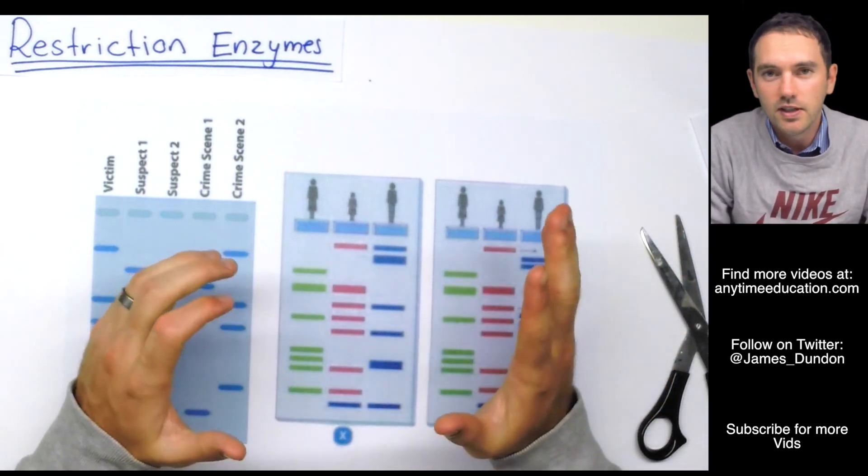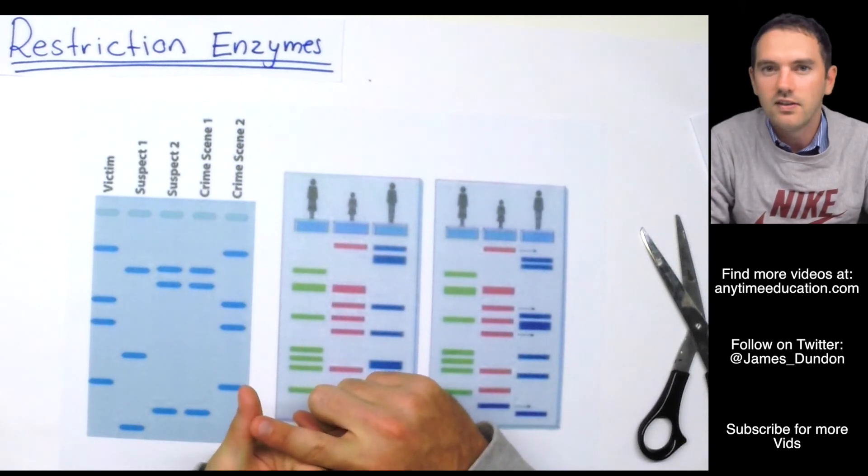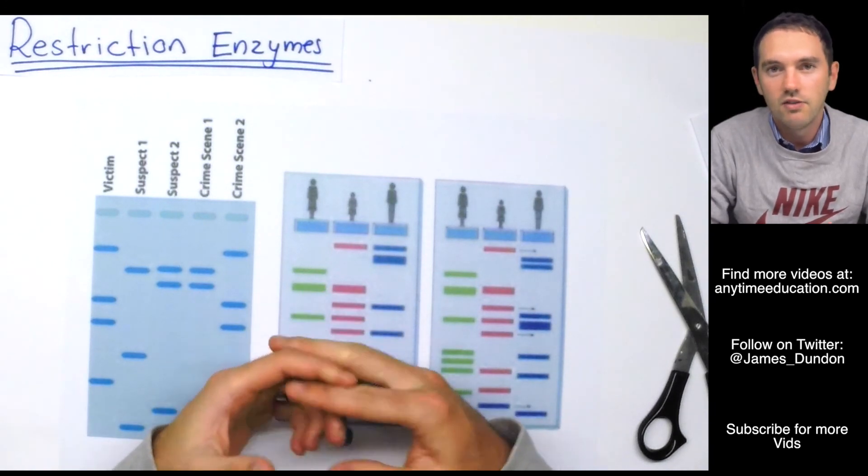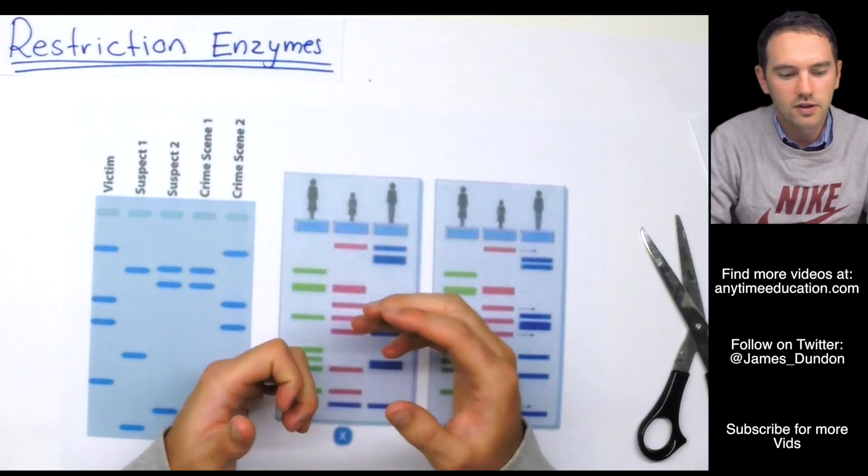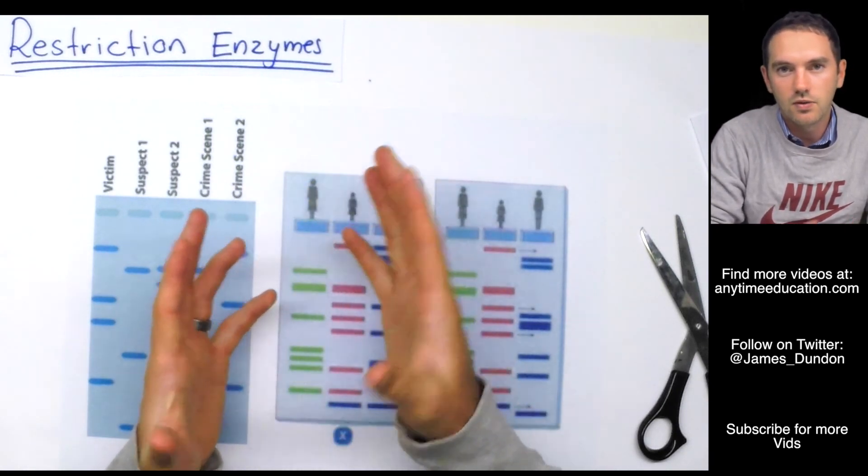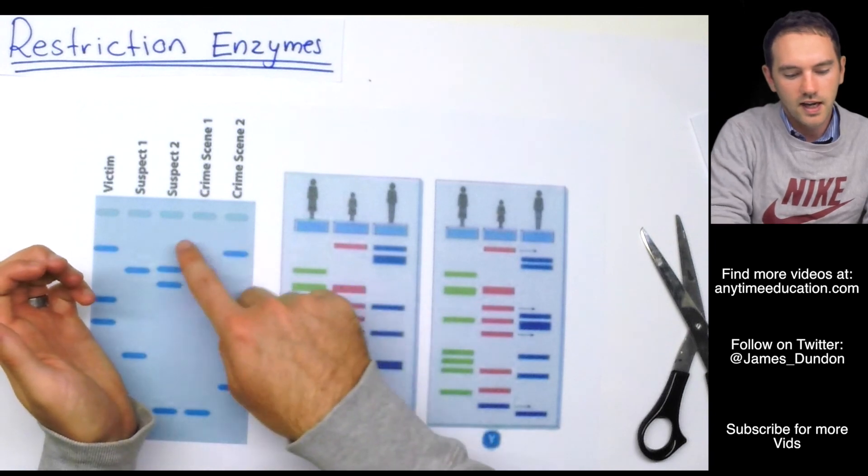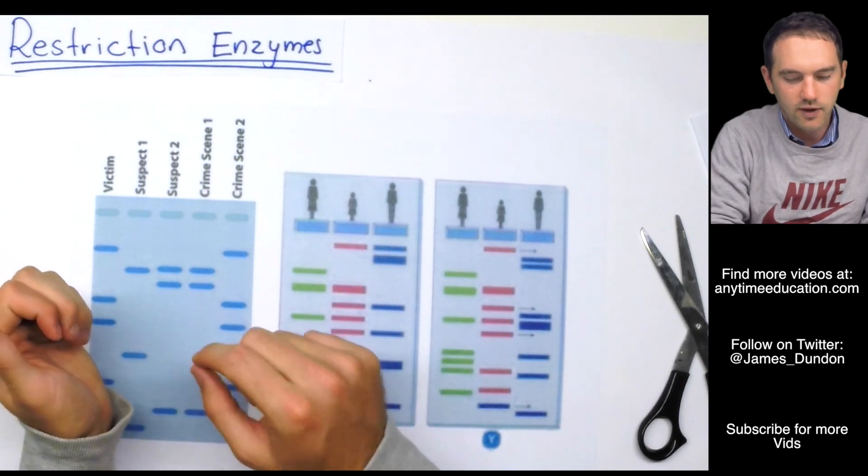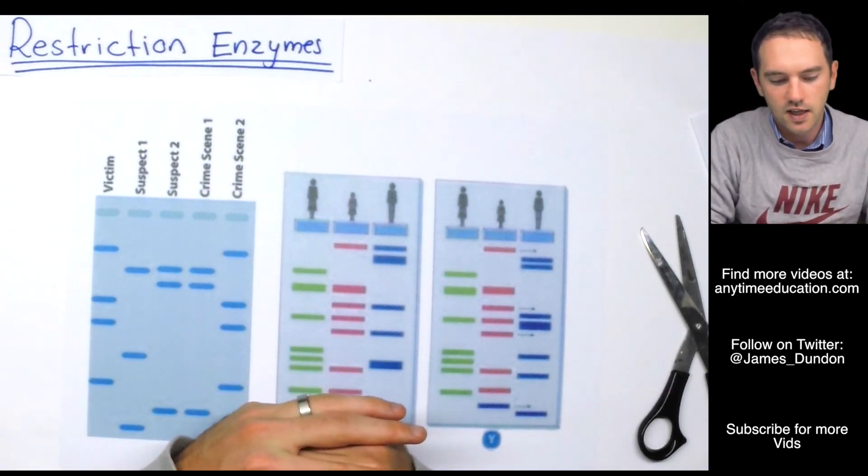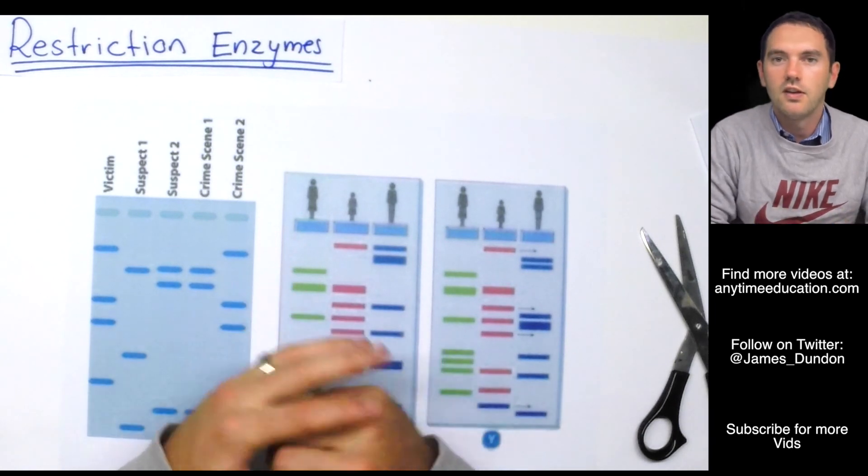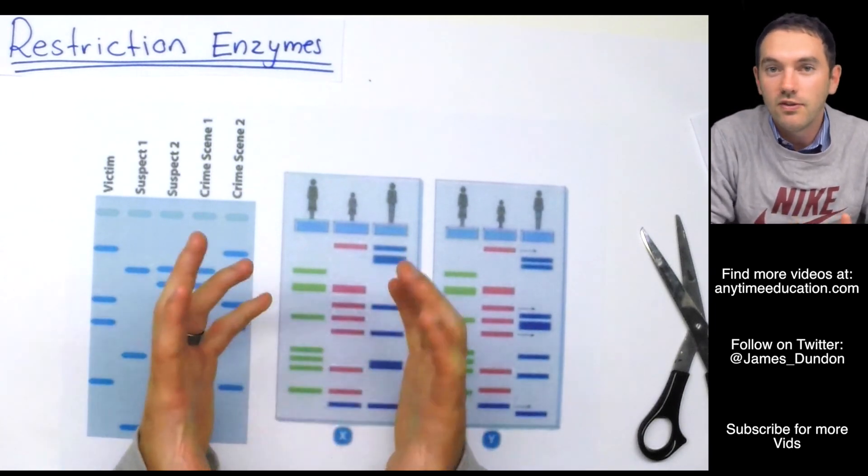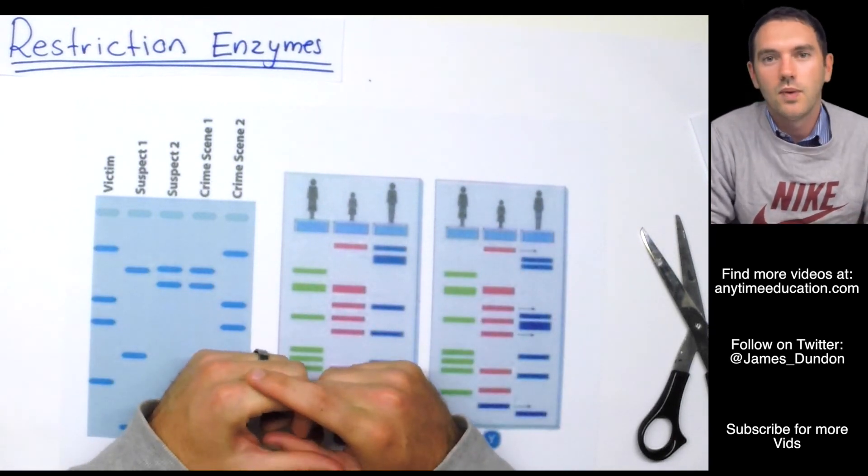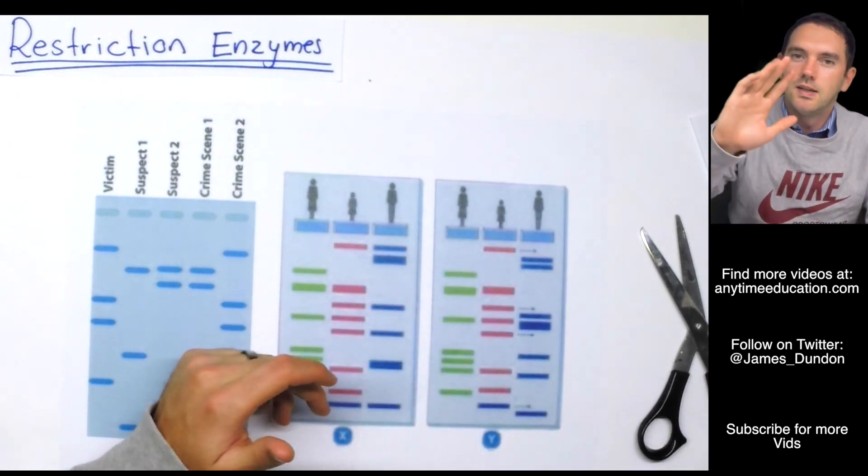So restriction enzymes, in summary, came from bacteria with their own defense against viruses. We've now used those restriction enzymes and applied them to genetic engineering for our own benefit. Whether it's to clone DNA or introduce DNA into a plasmid, or whether it's to cut up DNA into fragments and then run them on the gel to see a person's DNA fingerprint. So that's Mr. Dunnan from Anytime Education. Hope you find that helpful. Give me the thumbs up, subscribe. All that stuff really helps. Check out our Facebook page and our website AnytimeEducation.com. Peace out.